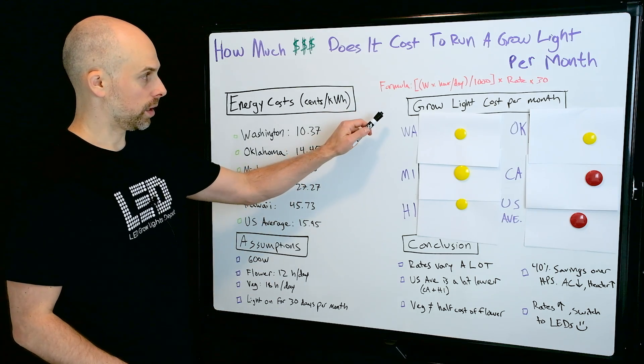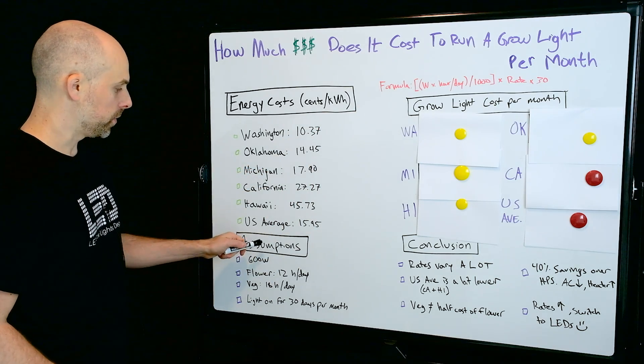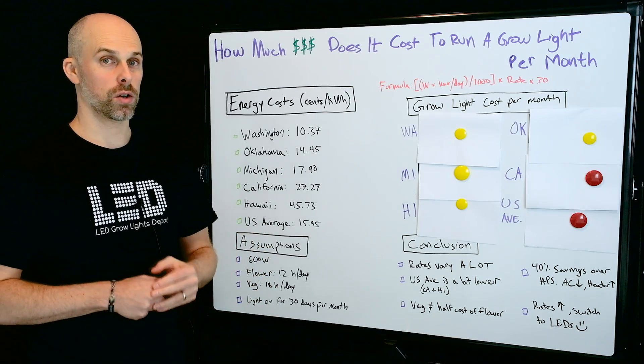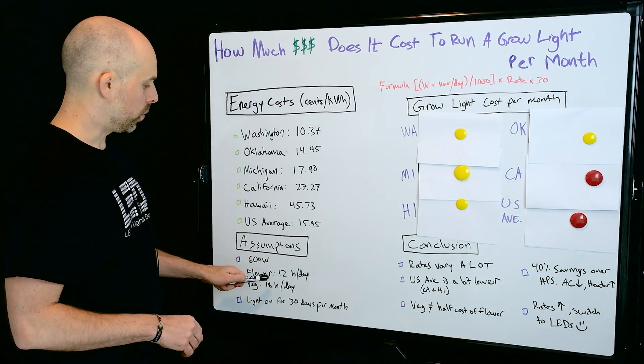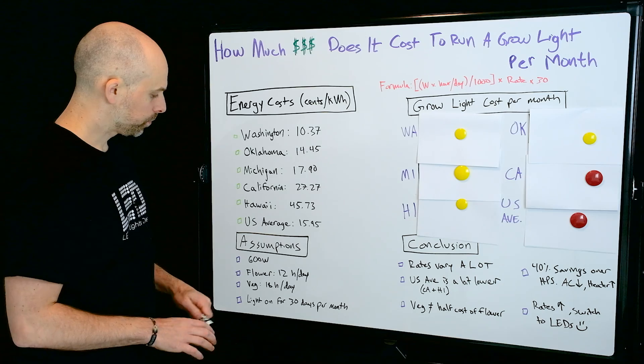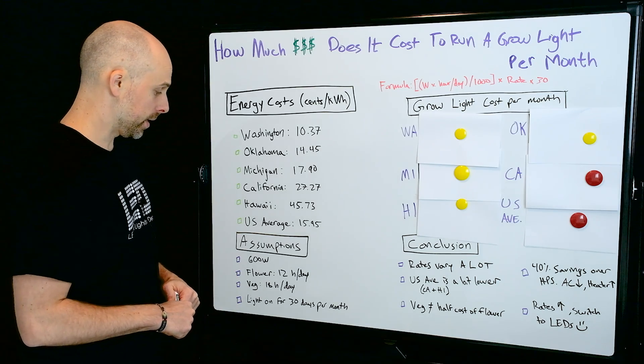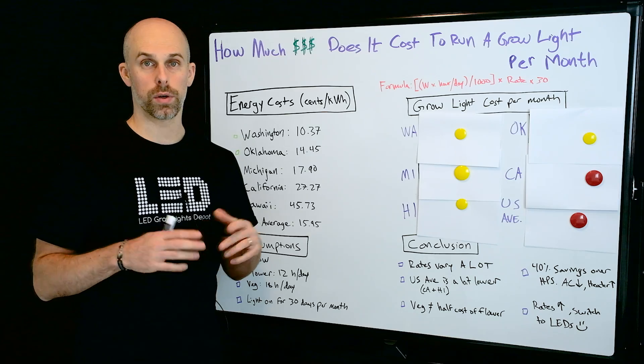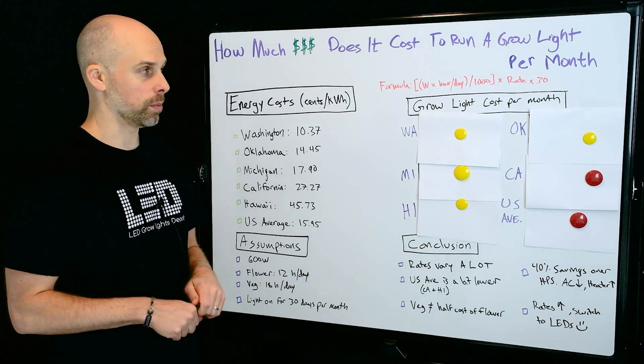So to calculate the grow light cost per month, we have a few assumptions here. We're going to assume that the grow light is drawing 600 watts at the wall and that we're flowering for 12 hours a day and we're vegging for 18 hours a day. And lastly, that the light is going to be on for 30 days in the month.